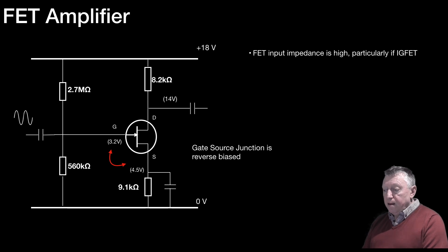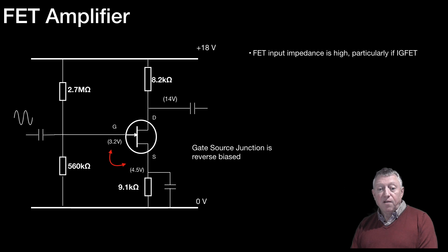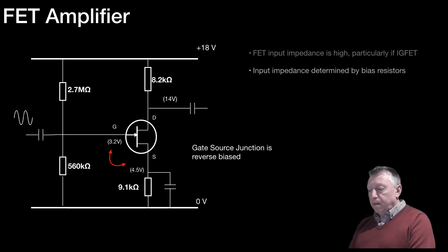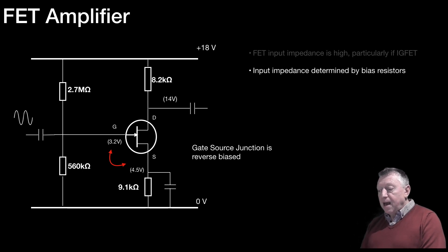The FET input impedance is high, particularly if an IGFET is used. That isn't the symbol for an IGFET, but if an IGFET had been used there, the input impedance would be very high. And the input impedance is actually determined, because it's so high for the device itself, the input impedance ends up getting determined by the bias chain.